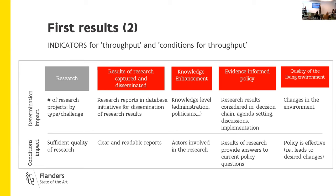For indicators, you have two types: direct throughputs and the conditions of your research. For example, you can monitor the impact of your research by seeing how the output is accessible in databases and how it is used. But you also have to consider the quality of your report — just because a report is in a database doesn't mean it's a good report. Similarly, if politicians didn't use a report, that might be because you're focusing on the wrong stakeholders.